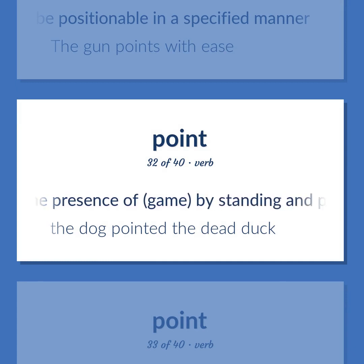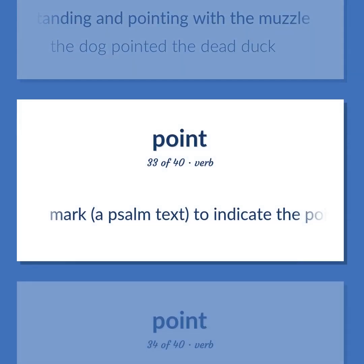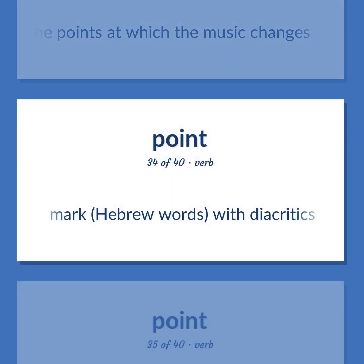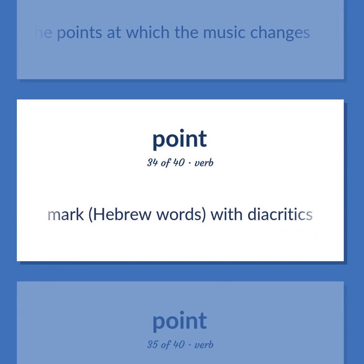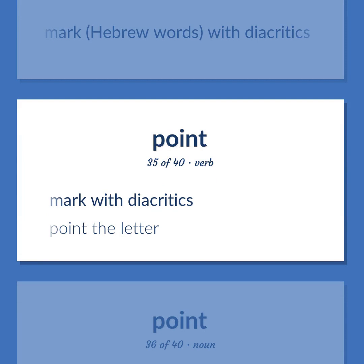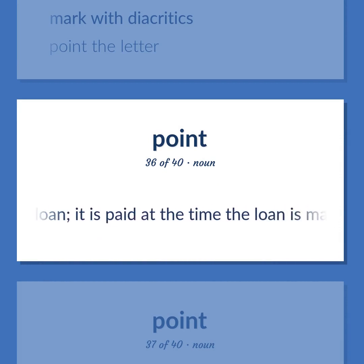Point: Indicate the presence of game by standing and pointing with the muzzle. Example: The dog pointed the dead duck. Mark a psalm text to indicate the points at which the music changes. Mark Hebrew words with diacritics; mark with diacritics. Example: Point the letter. 1% of the total principal of a loan, paid at the time the loan is made and independent of the interest on the loan.